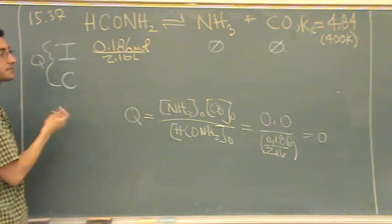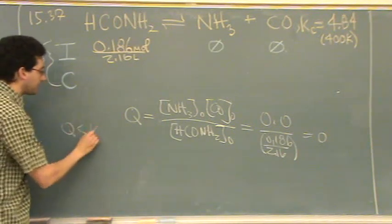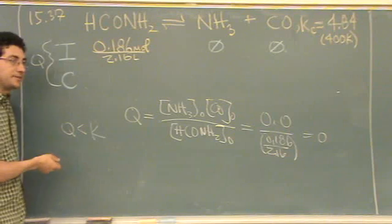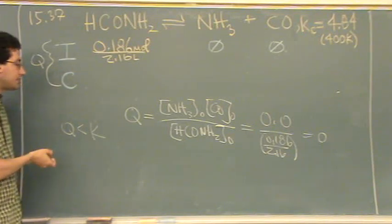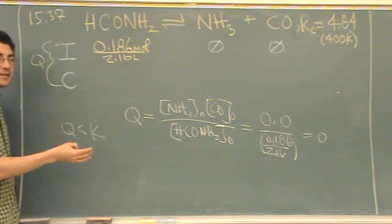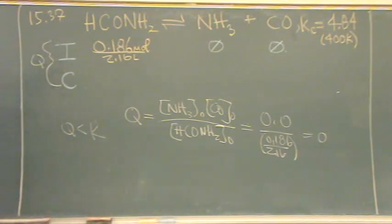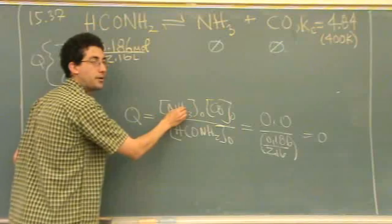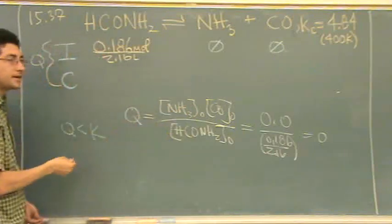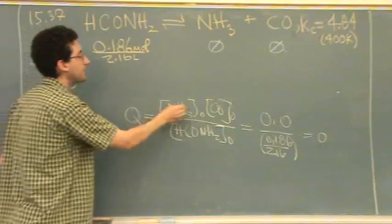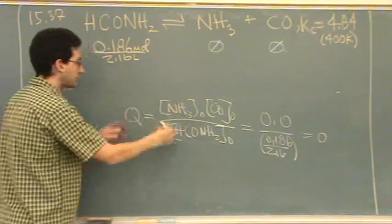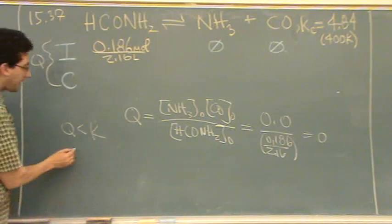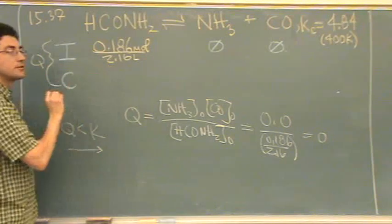So you get Q = zero. It's meaningless what K is — Q has to be smaller than K, because K won't be zero and it won't be negative. Since Q is smaller than K, there are not enough products; this value is too small. Because it wants to equal K, the reaction is going to shift to make more products — shift to the right — so that Q will equal K. Q always wants to be K.